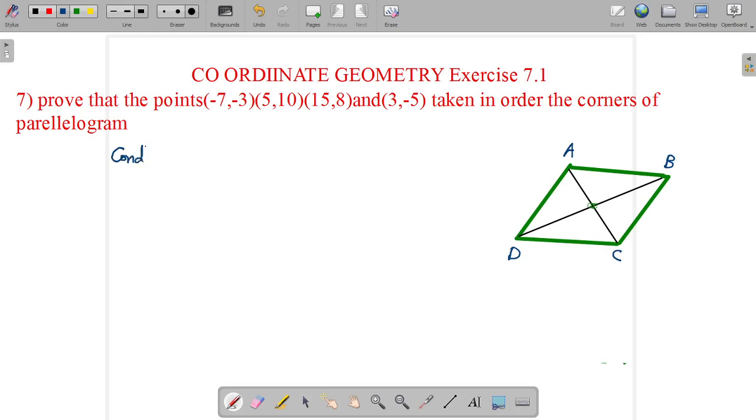The condition for parallelogram is the midpoint of diagonals are equal. If the midpoint of diagonals are equal, then it is called a parallelogram.